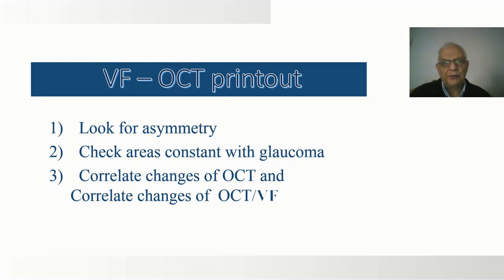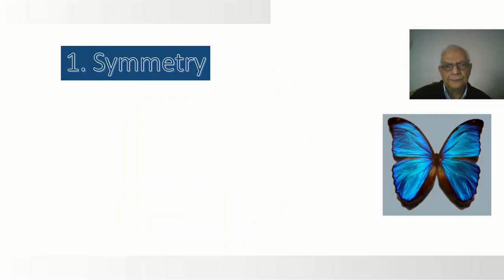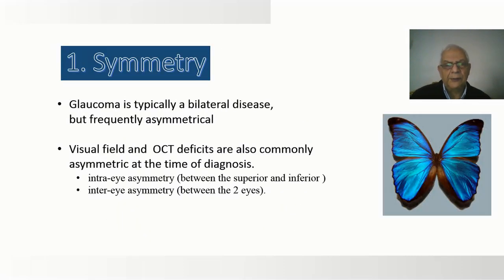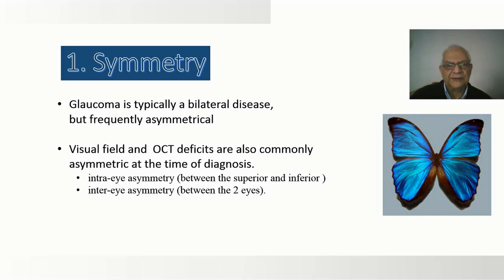To improve our performance, whenever you see a visual field or OCT printout, you need to check three main points. First, asymmetry. Glaucoma is typically a bilateral disease but frequently asymmetrical. Visual field and OCT defects are commonly asymmetric at the time of diagnosis. Differences can be found between superior and inferior parts or between the right and left eye.